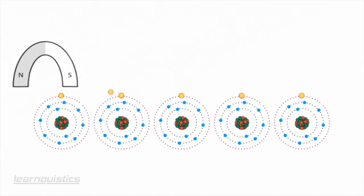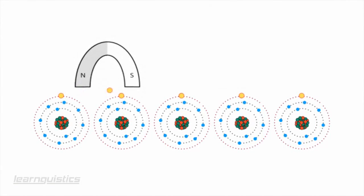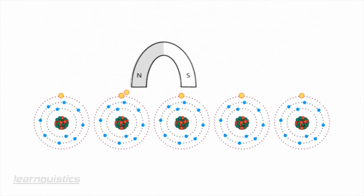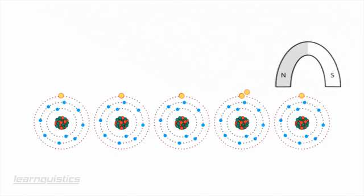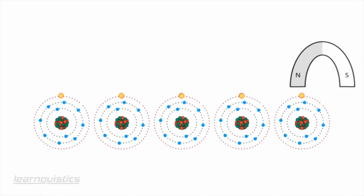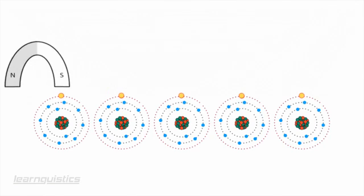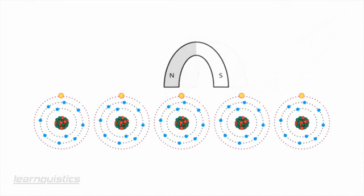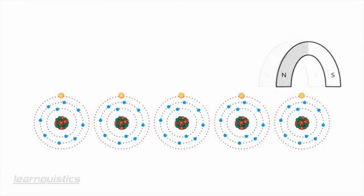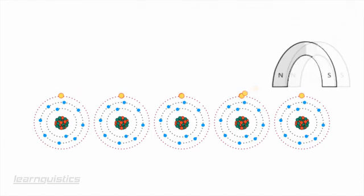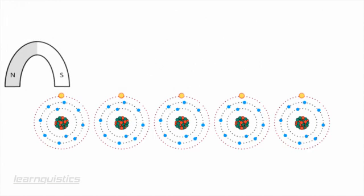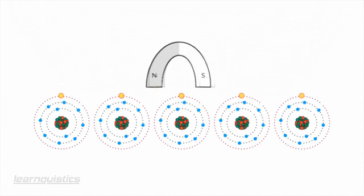So depending on which way the magnet is moved, it will dictate the direction of current flow and which end of the wire is positive and which end is negative. Also note that the faster the magnet is moved, then the faster the electrons will move through the wire, which will then increase the electrical energy being created in the wire.